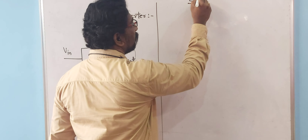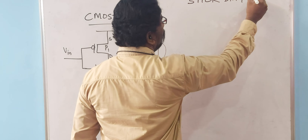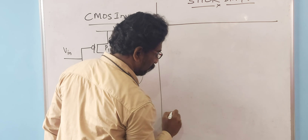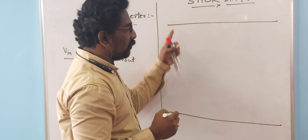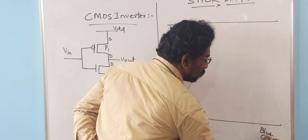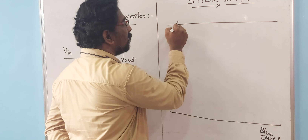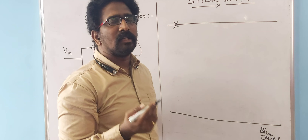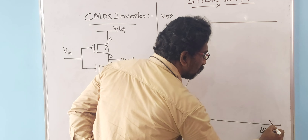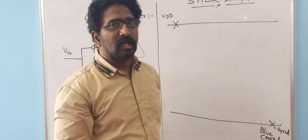In order to draw the stick diagram, we should first draw two power rails. These power rails will be in blue in color, as the metal layer is always represented in blue. Mark a cross on the top rail to indicate VDD connection, and another cross on the bottom rail to indicate the ground supply — that is, zero volts.